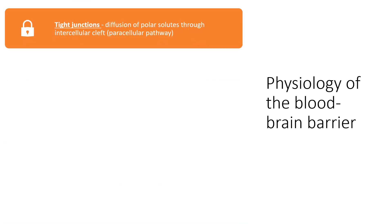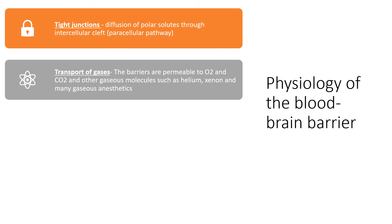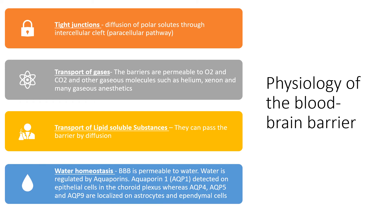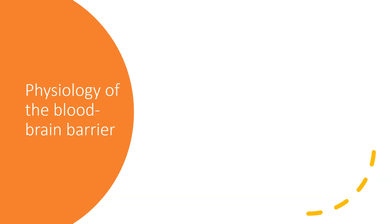Diffusion of polar solutes through tight junctions is called the paracellular pathway. Transport of gases — oxygen, carbon dioxide, helium, xenon, and many gaseous anesthesia agents — occurs freely because they are permeable. Lipids can also diffuse through the blood-brain barrier. Water is permeable but regulated by aquaporins: aquaporin-1 is on epithelial cells of the choroid plexus, while aquaporins 4, 5, and 9 are localized on astrocytes and ependymal cells.